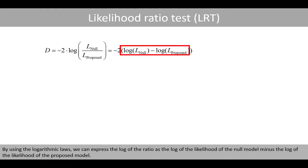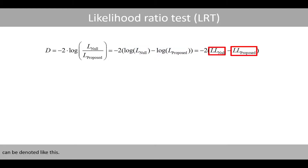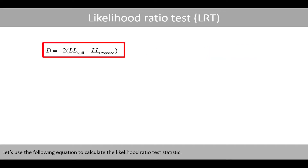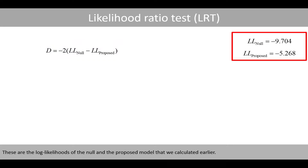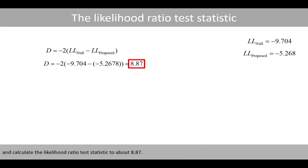The likelihood ratio test statistic is calculated by multiplying negative two by the log of the ratio of the likelihoods of the null and the proposed model. By using the logarithmic laws, we can express the log of the ratio as the log likelihood of the null model minus the log likelihood of the proposed model. Using this equation, we calculate the likelihood ratio test statistic to be 8.87.